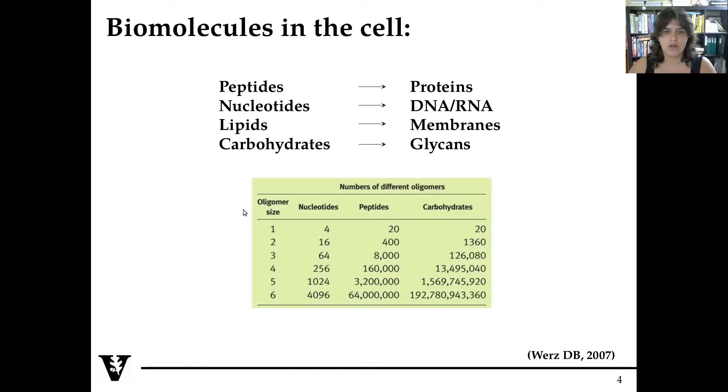When we go up to two monomers, we can have a combination of 16 for nucleotides, 400 for peptides, and 1,360 for carbohydrates. The reason why this number increases much more than the peptides is that carbohydrates can be linked in a different way. While nucleotides and peptides are usually just linked linearly in a direction that goes from the N-terminal to the C-terminal, carbohydrates can be branched. As we increase the oligomeric size, we increase exponentially the possible combinations of sugars.